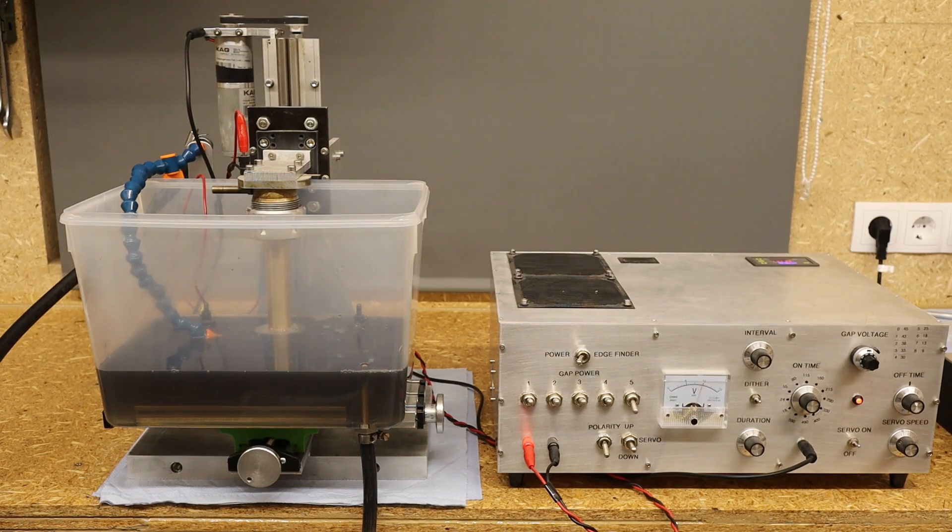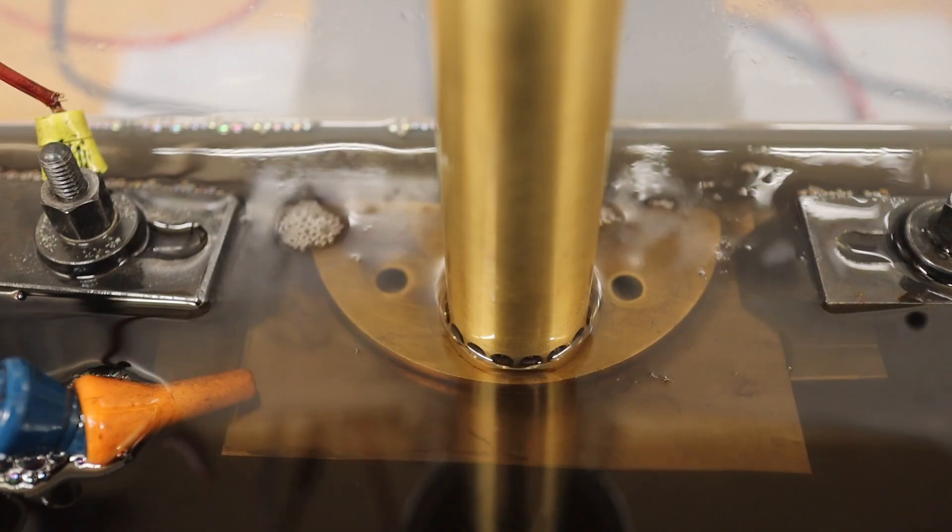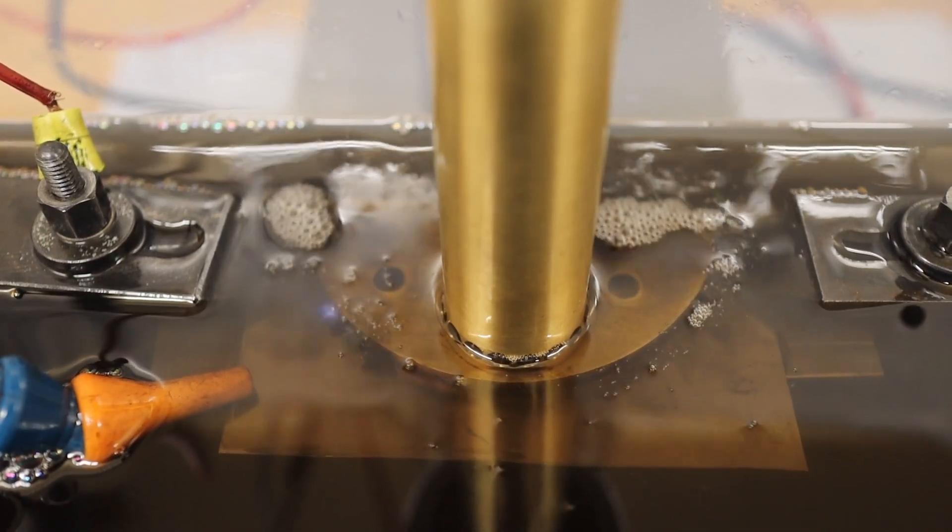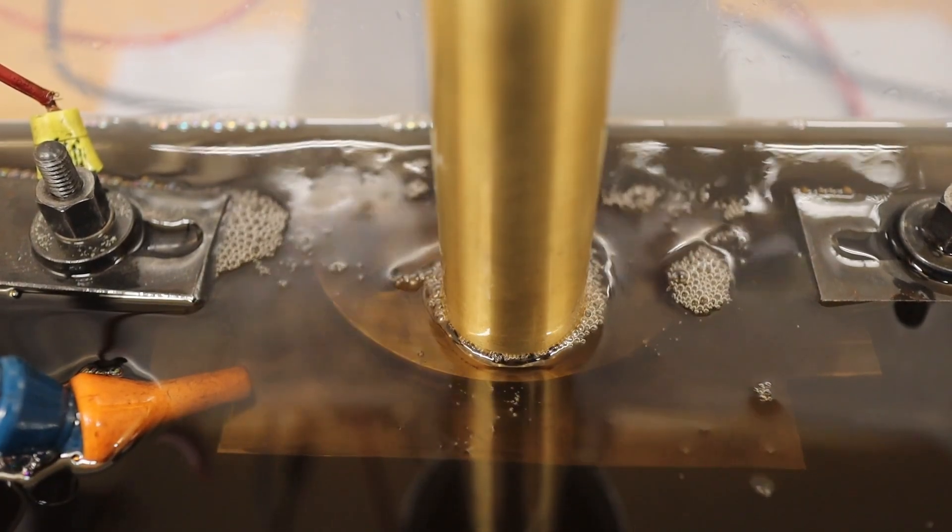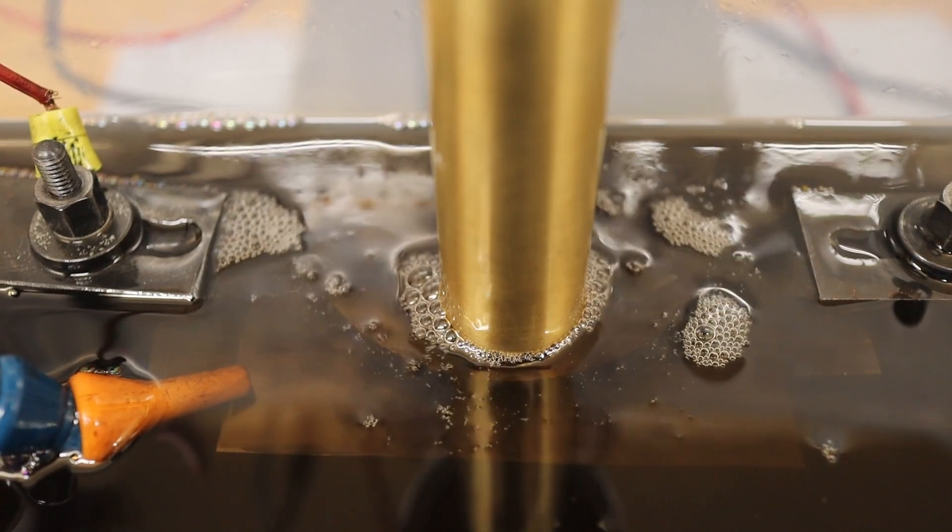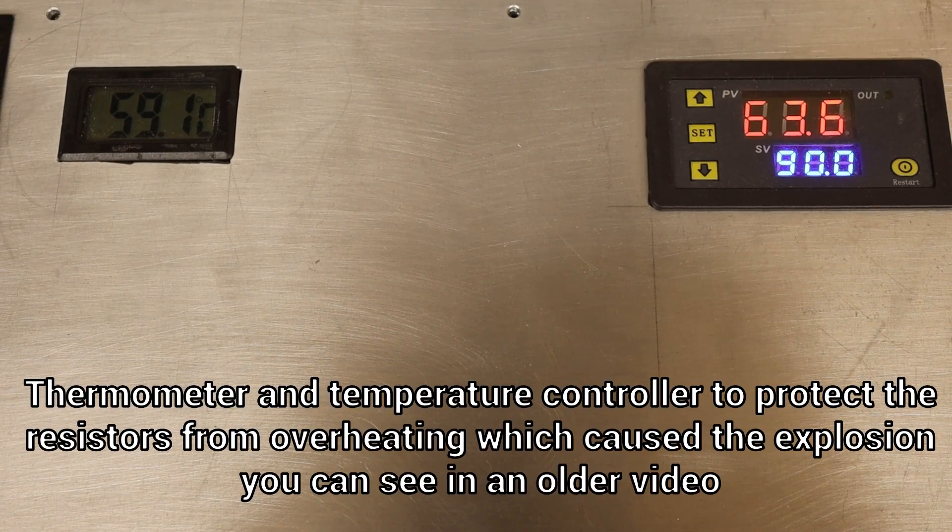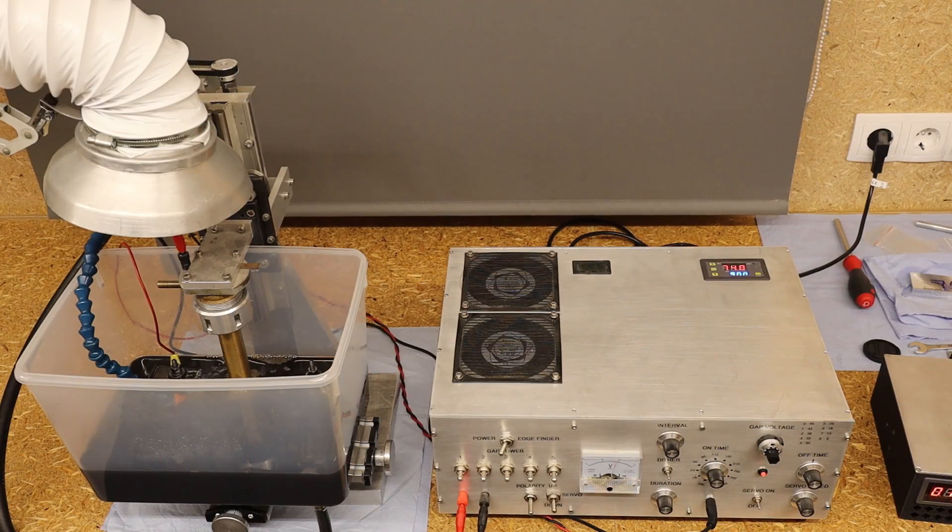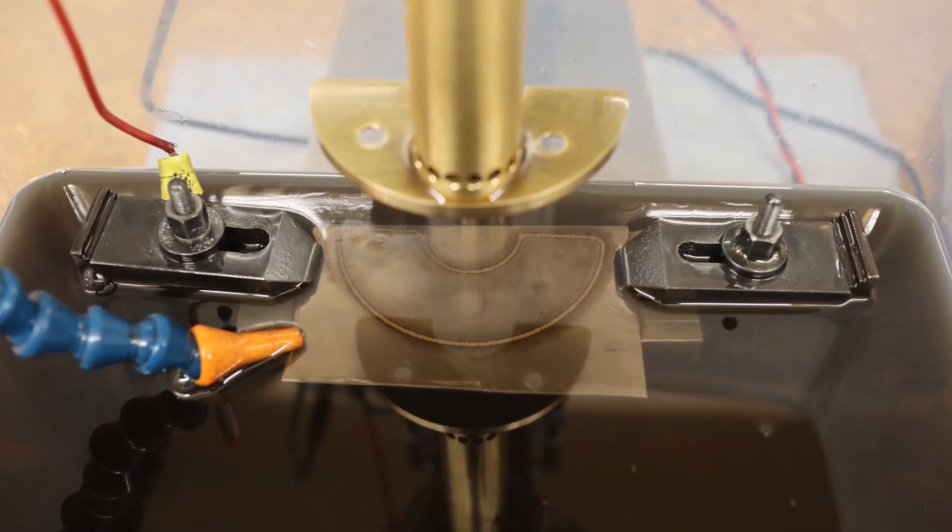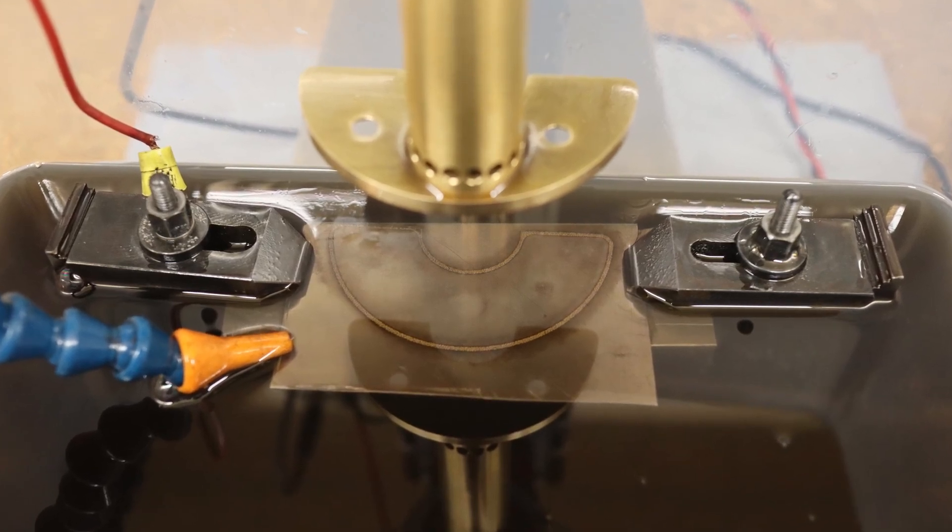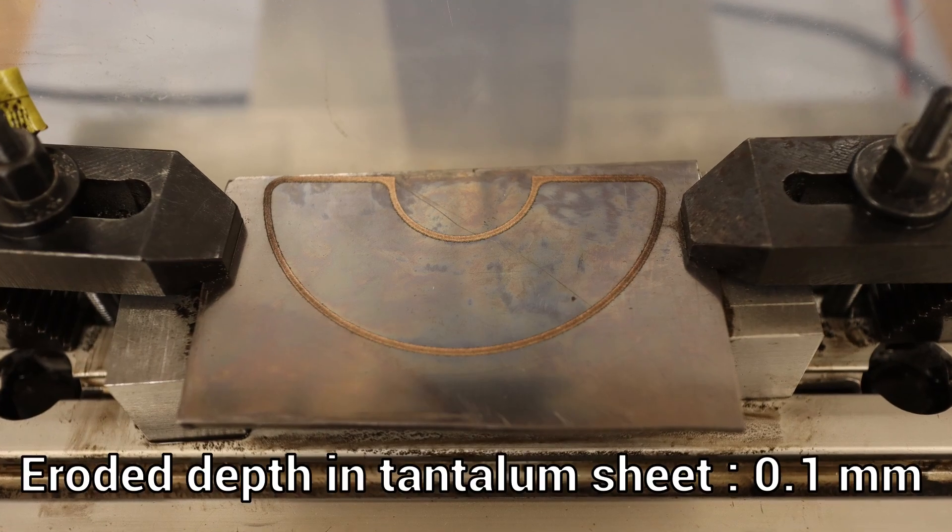Everything looks good and is running smoothly and stably. After about half an hour and an eroding depth of about two millimeters, I noticed that the surface of the tantalum plate is barely scratched. Indeed, the brass electrode has two millimeters of wear while perhaps 0.1 millimeters has been removed from the tantalum sheet.